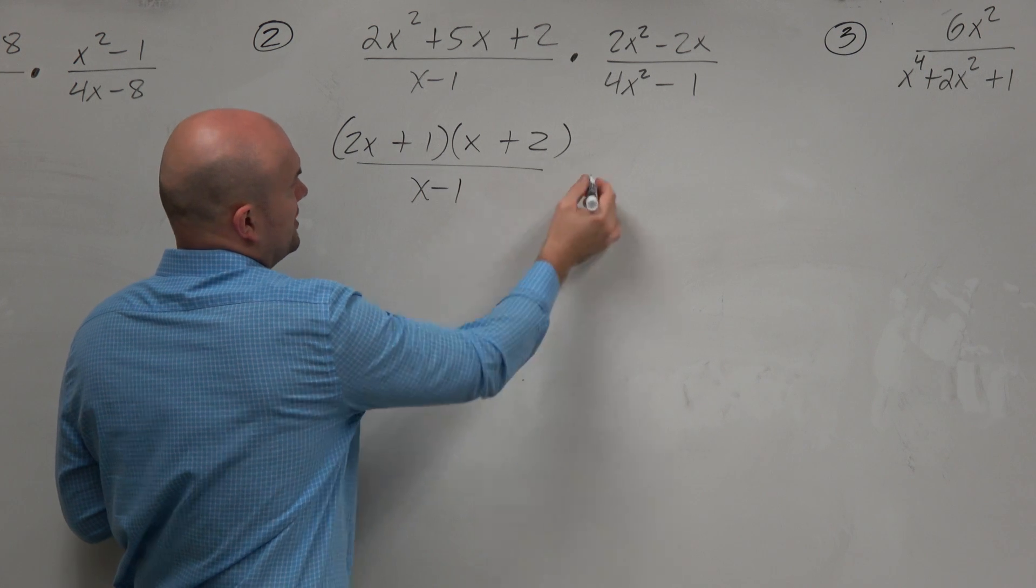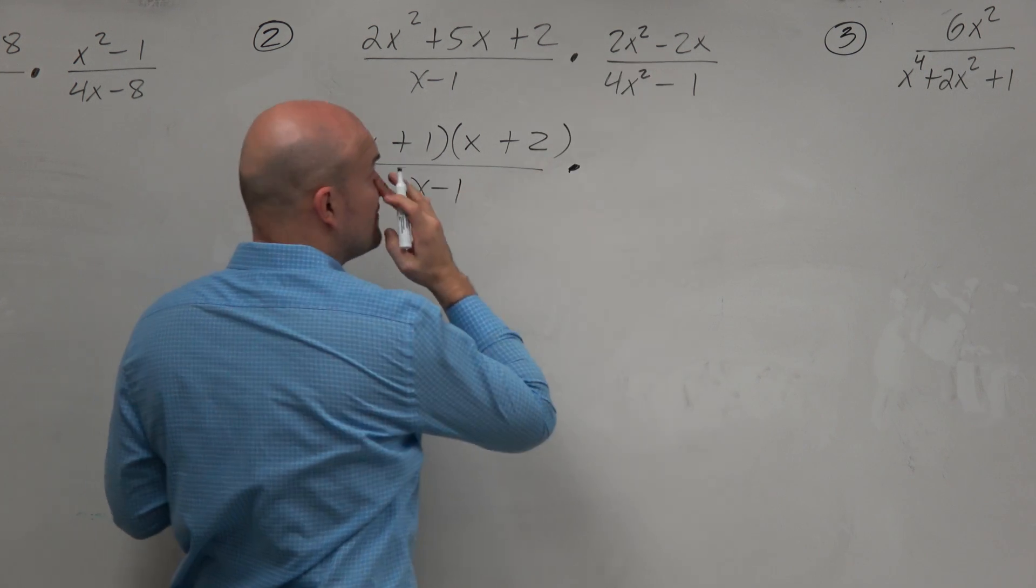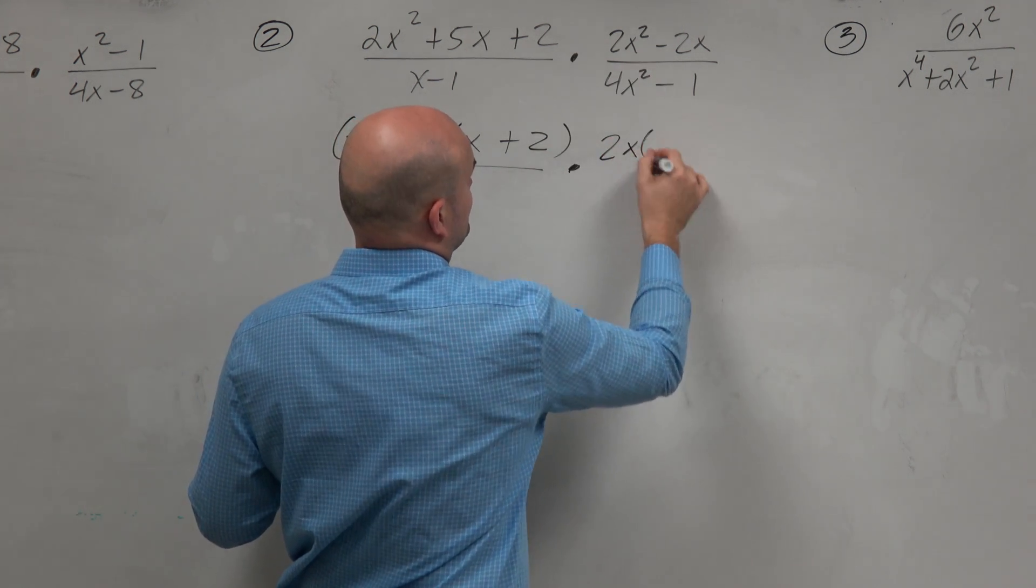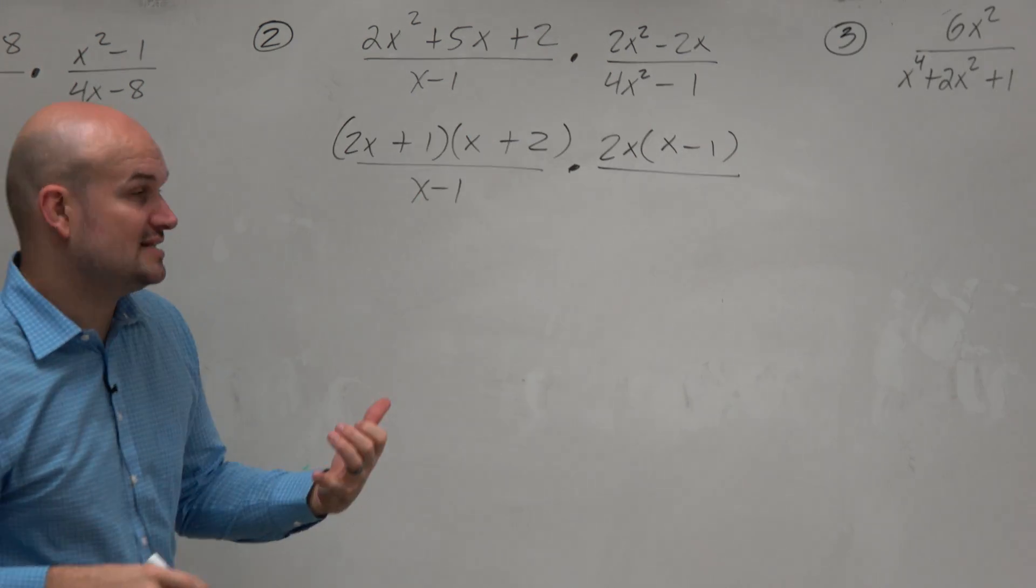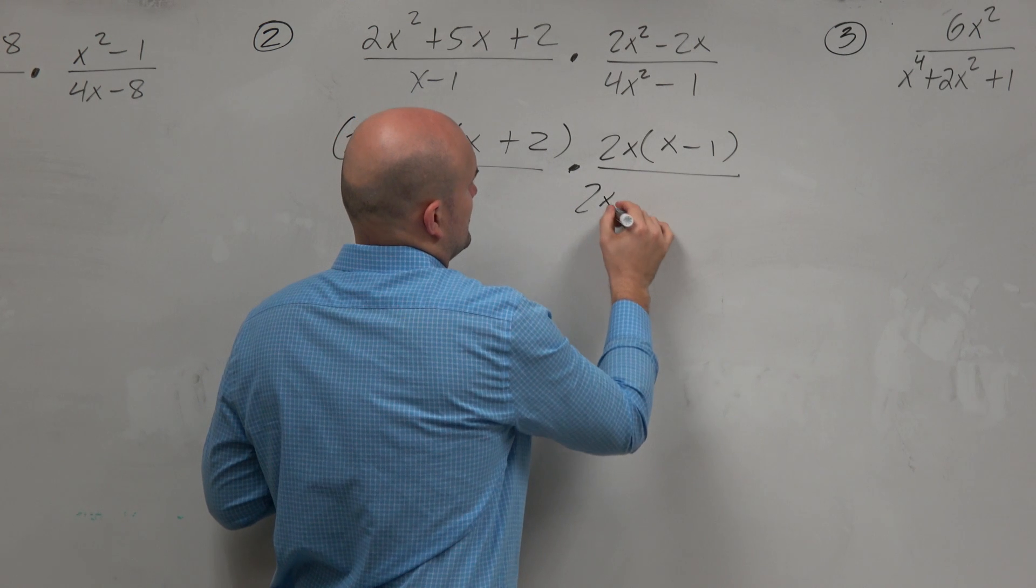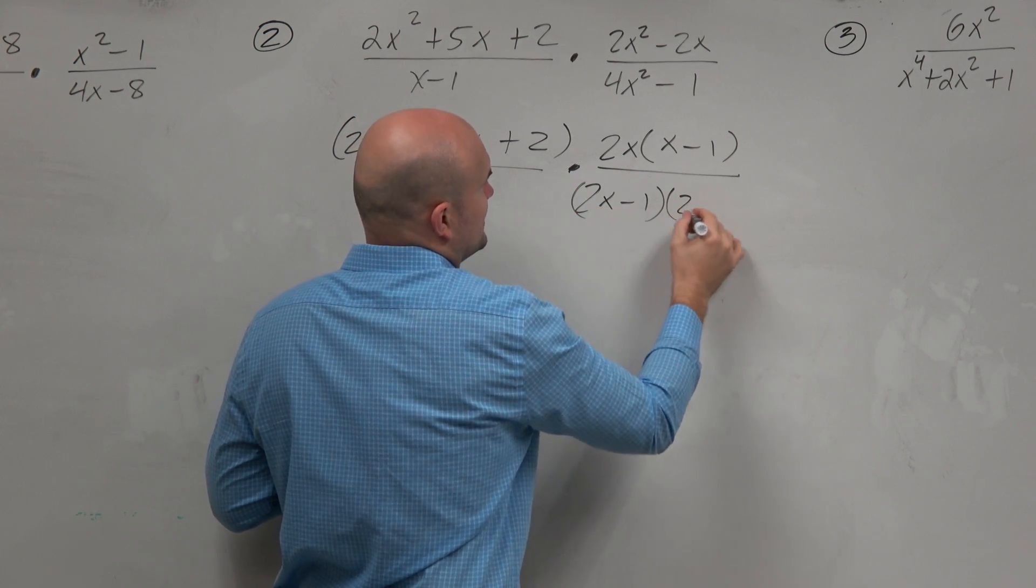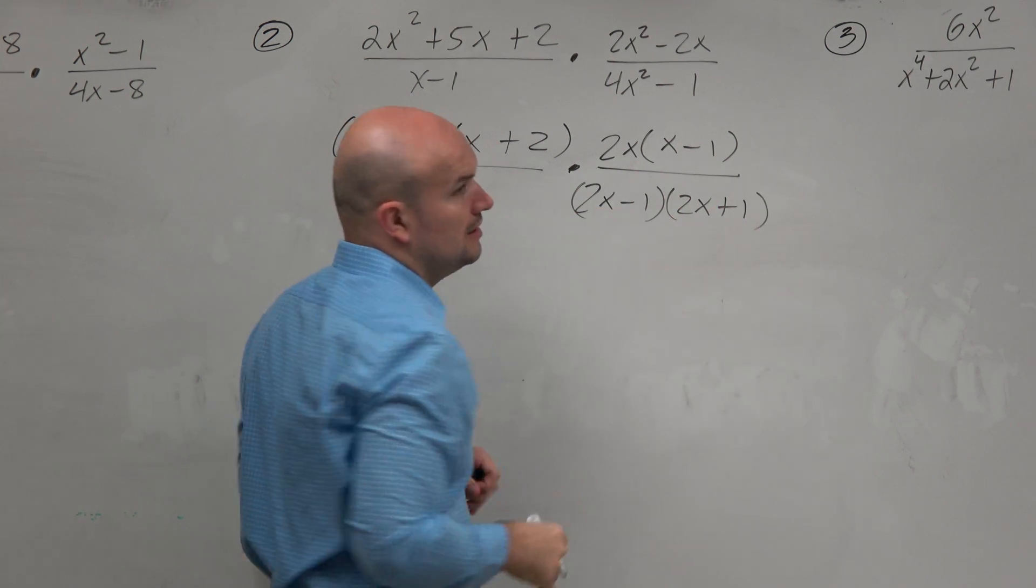All over x minus 1 times... Here, I can factor out a 2x. And then over here, I notice that this is a difference of two squares: 2x minus 1 and 2x plus 1.